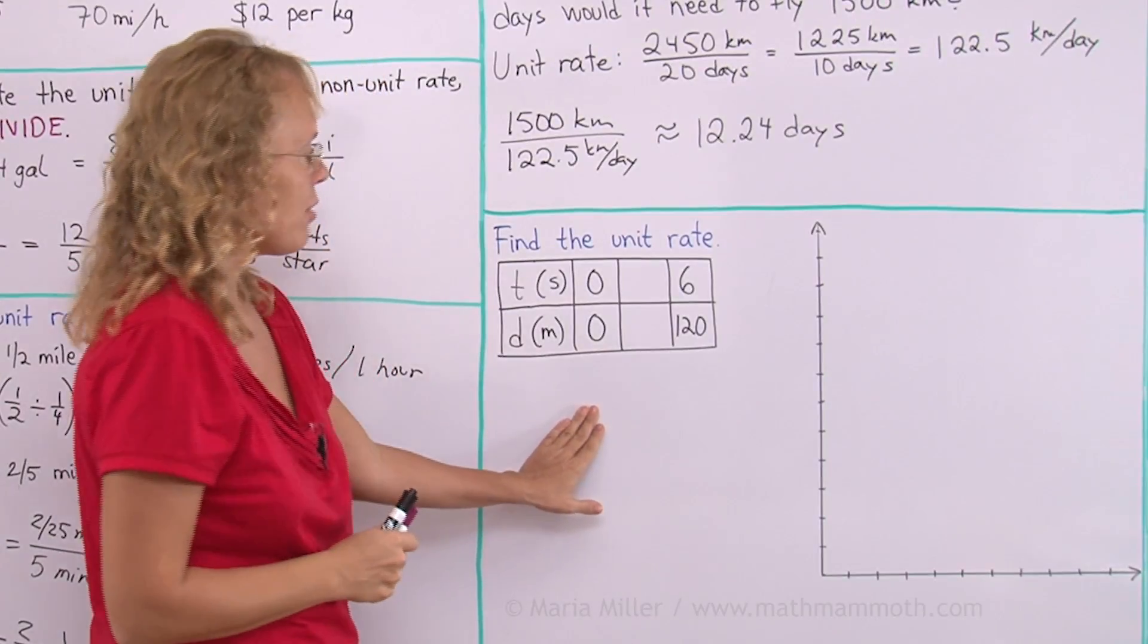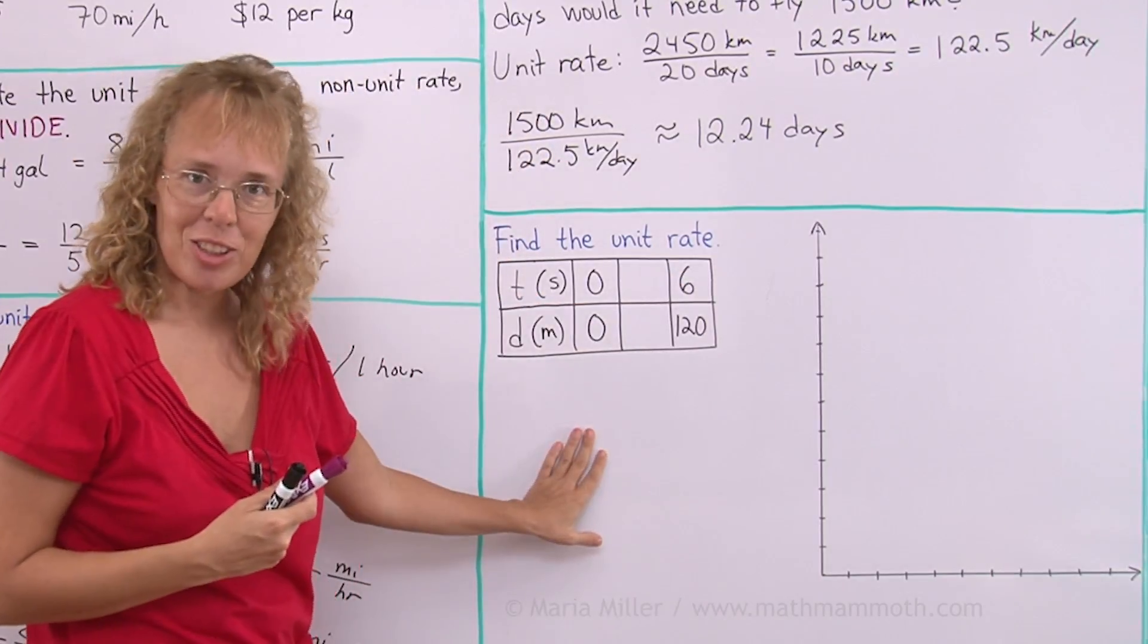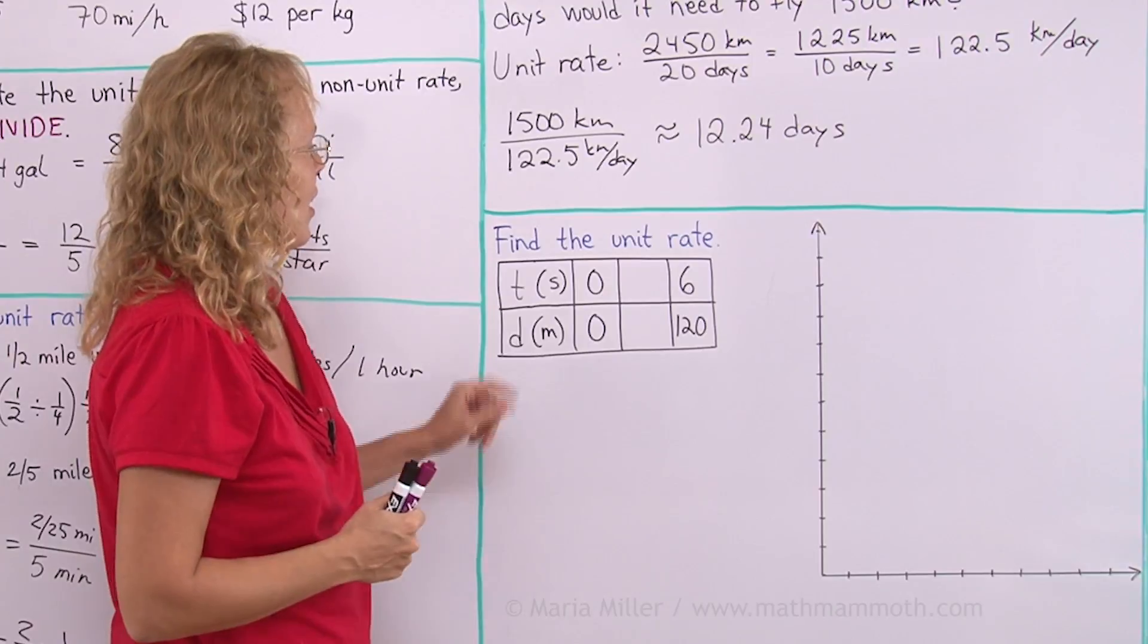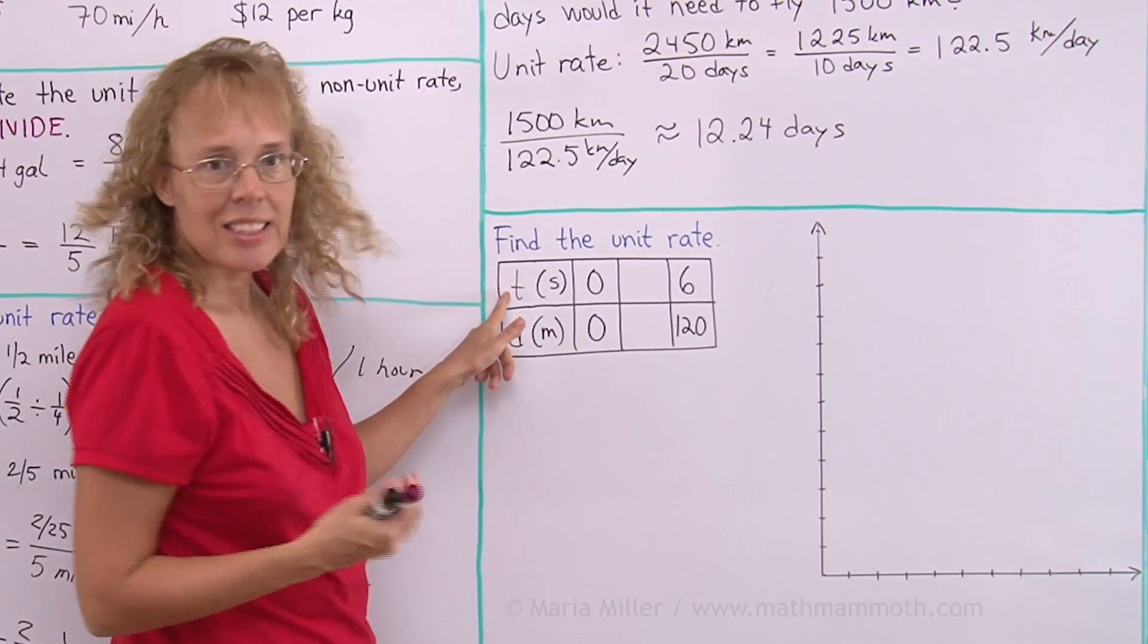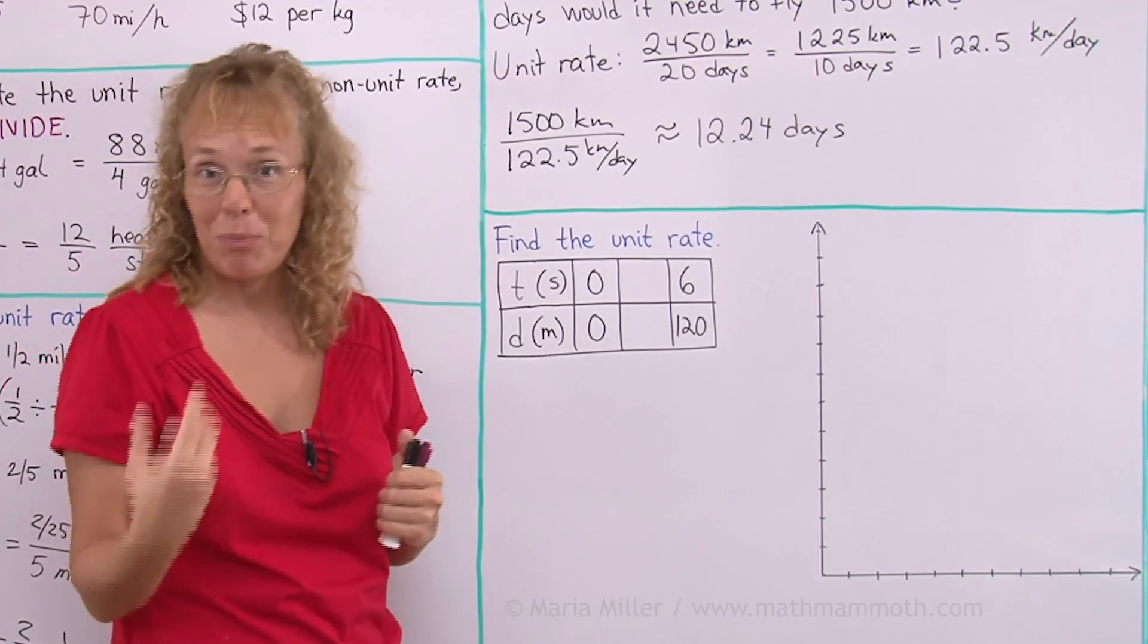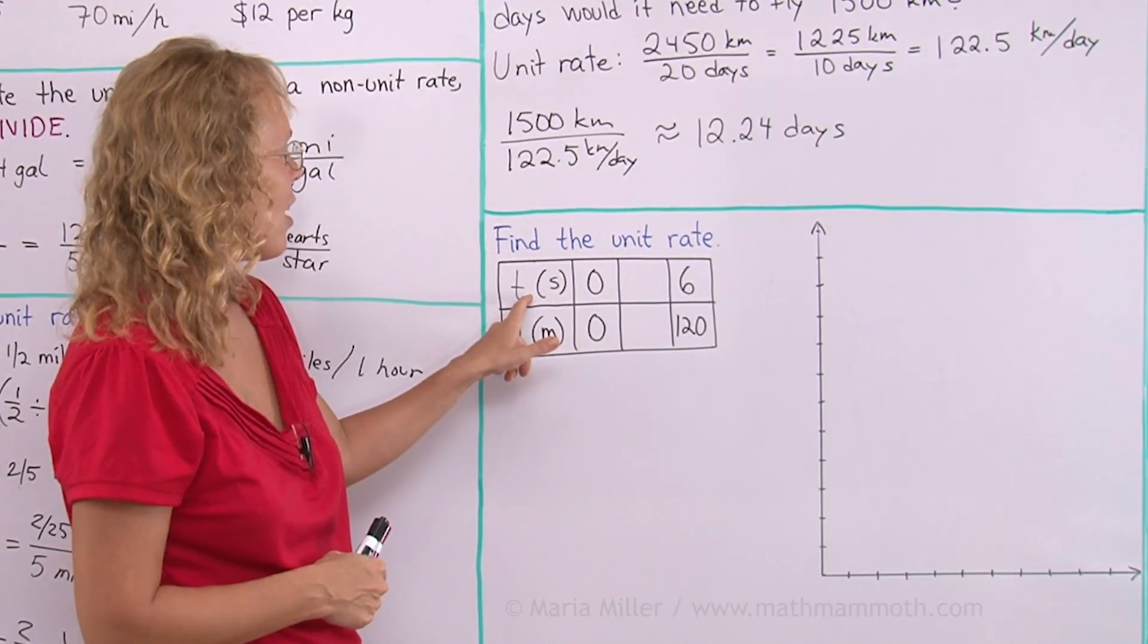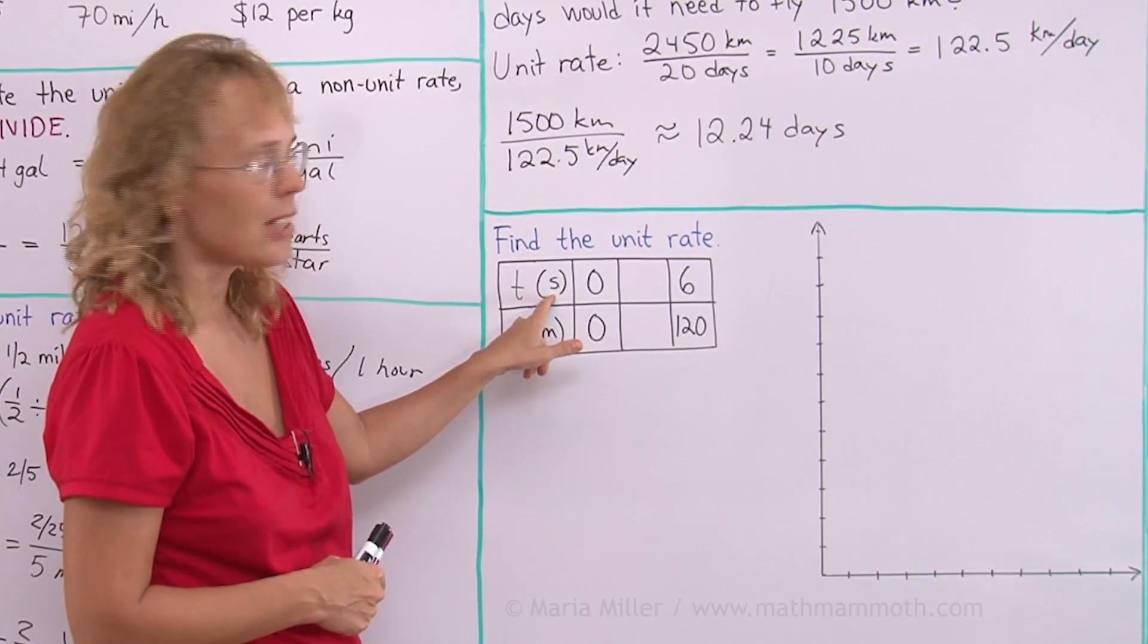Here, find the unit rate first of all. Then we're going to plot something. We're going to write an equation. Find the unit rate. T means time. D means distance. We are back to the distance and time and speed. And distance is in meters. Time is measured in seconds. S is seconds.